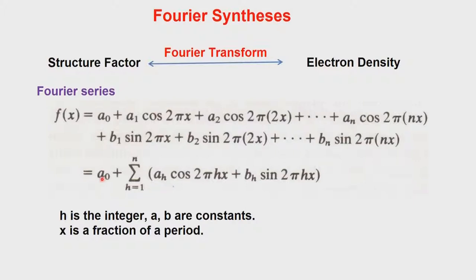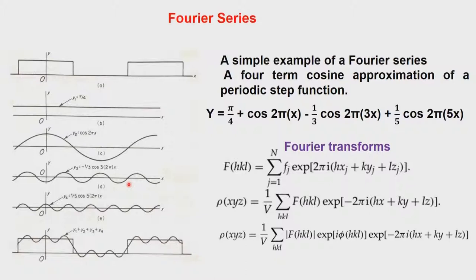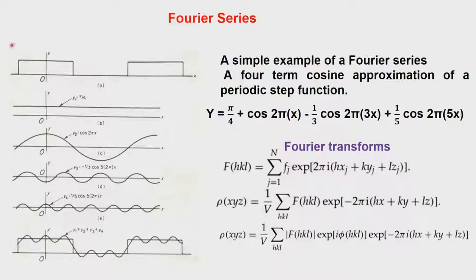Now let us consider a situation where h is an integer, a and b are constants, and x is a fraction of a period — x is the fraction of the period. To understand this better, we consider a periodic step function as shown here. This is from the textbook of Stout and Jensen. Towards the end of the course I will give acknowledgments to all the textbooks from which I have taken pictures and acknowledge the individual authors.